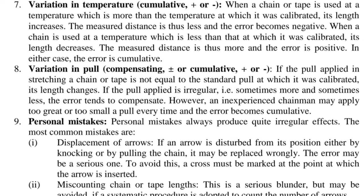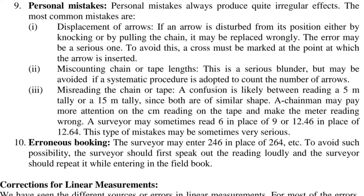9. Personal mistakes: Personal mistakes always produce quite irregular effects. The most common are: First, displacement of arrows — if an arrow is disturbed from its position, it may be replaced wrongly; a cross must be marked at the point where the arrow is inserted. Second, miscounting chain or tape lengths — a serious blunder, but may be avoided by systematically counting the number of arrows. Third, misreading the chain or tape — confusion is likely between a 5-meter tally and a 15-meter tally; a surveyor may read 6 in place of 9, or 12.46 in place of 12.64. 10. Erroneous booking — the surveyor may enter 246 in place of 264; to avoid this, the surveyor should speak out the reading loudly and repeat it while entering in the field book.